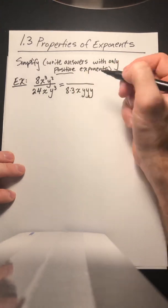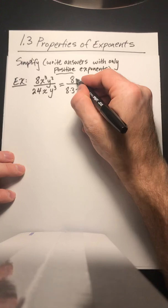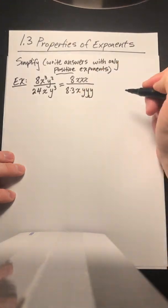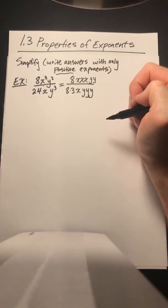Now in the numerator I have an 8. I have 3 x's so x, x, x and then I have 2 y's. So when in doubt write it out.